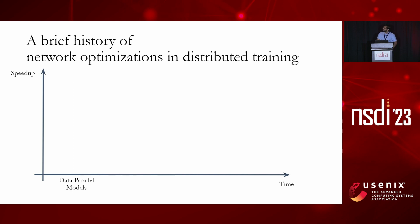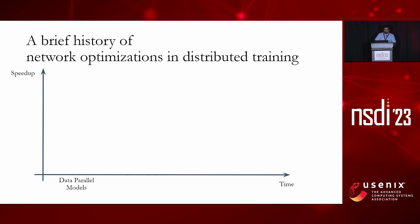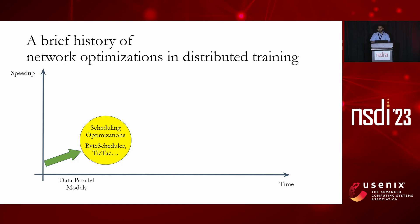Let me start with a brief history of network optimizations in distributed training leading up to Syndicate. At the very beginning, we had compute-bound models that were parallelized by replicating them across machines in a cluster and doing parallel executions during training — a mode called data parallelism. Popular ML frameworks such as TensorFlow and PyTorch have modules for distributed data parallelism. The scheduling heuristics for network operations in these frameworks were very simple: just FIFO scheduling. The first wave of optimizations looked at proposing better scheduling heuristics for these network operations over time.